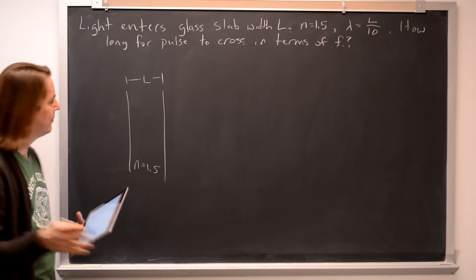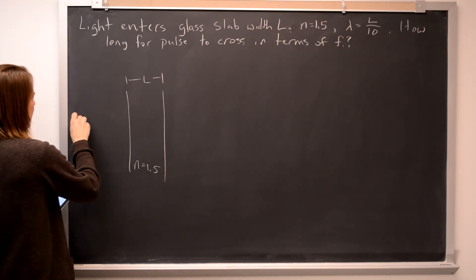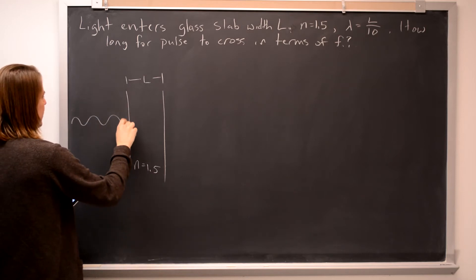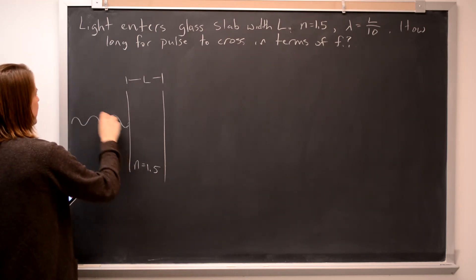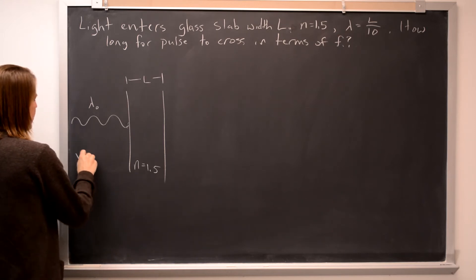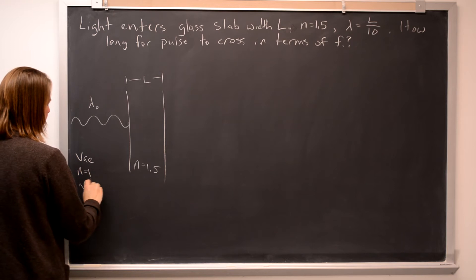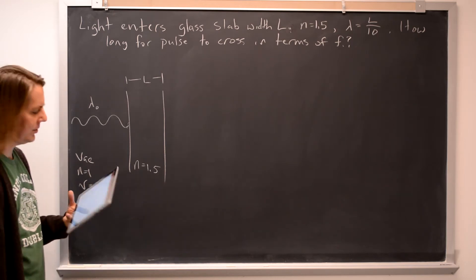So first let's just talk about the physics of what's going on. You've got to think about what happens when light goes into glass. We're going to say the light at first has a wavelength here of lambda naught, and out here we're in vacuum or air. So N equals 1, and the speed of the light is C, 3 times 10 to the 8 meters per second.